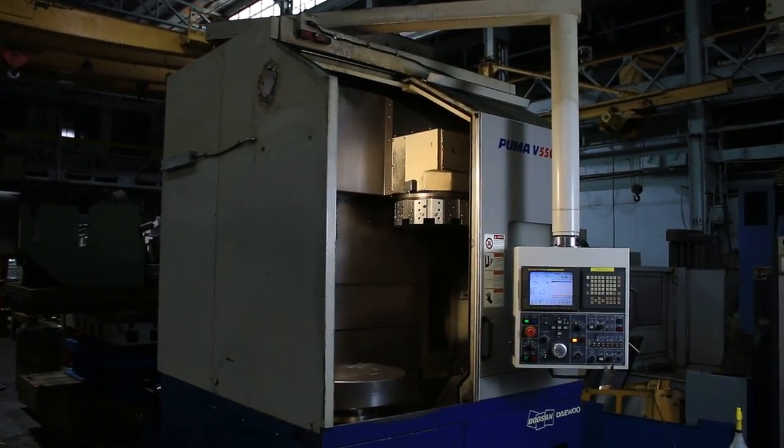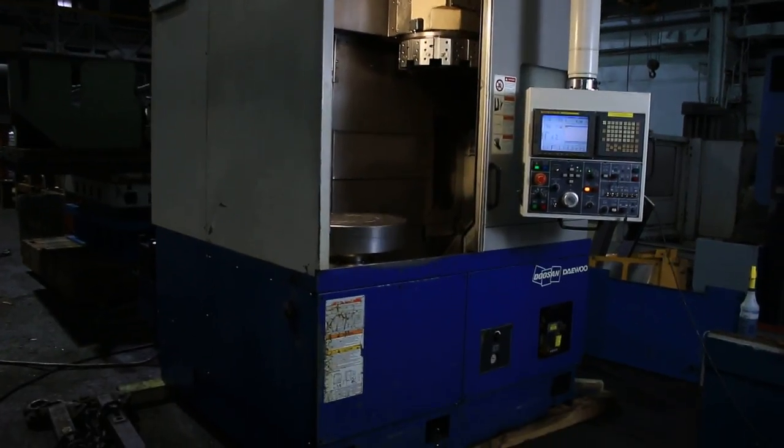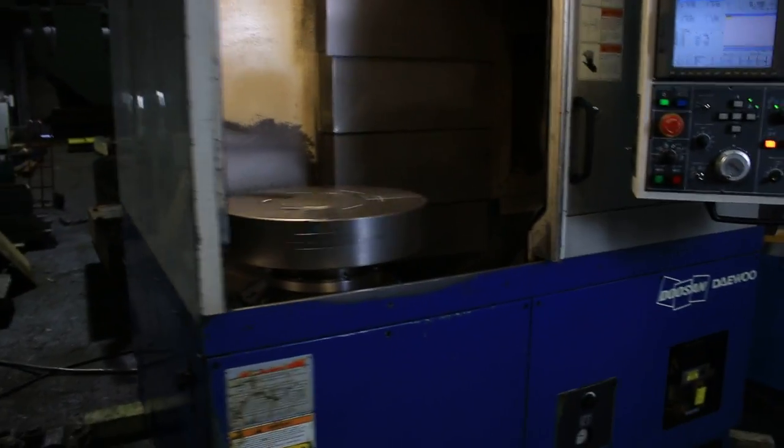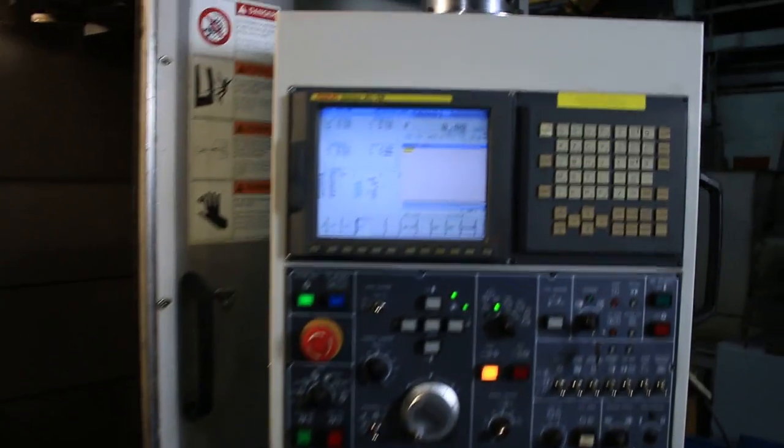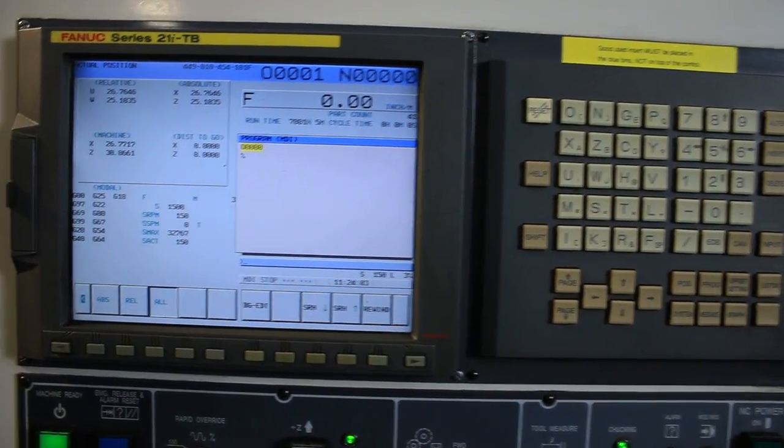Today we have a 2006 Daewoo Puma V-550 Vertical Turning Center with FANUC-21ITB control. Machine's got a 21-inch chuck, 10-position turret. It's also got a chip conveyor.